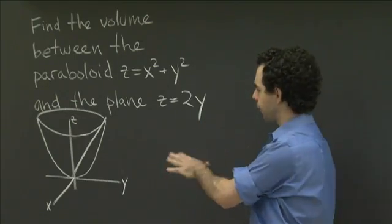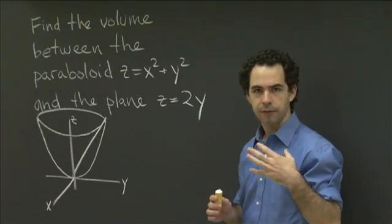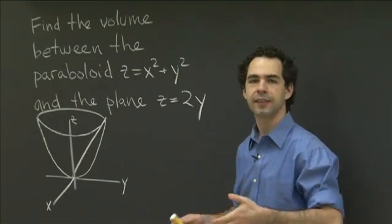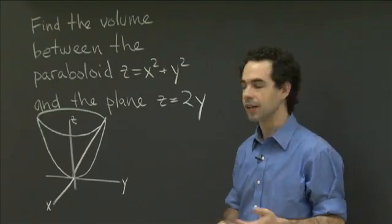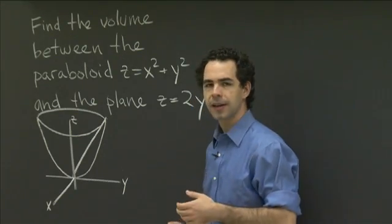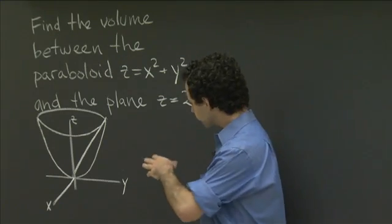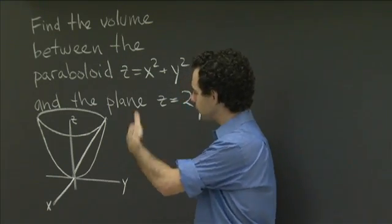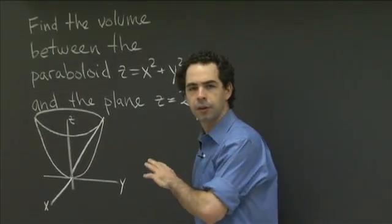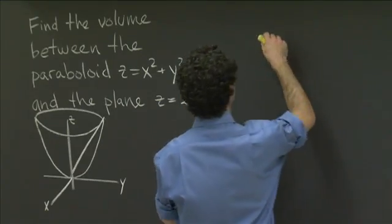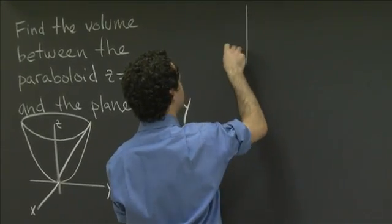Sometimes you have a problem with a triple integral and you need to set up your bounds of integration. Sometimes you can look at it and it's just clear what they are — if you're integrating over a cube, life is really easy. But in this case, this region that we want to integrate over is more complicated to understand. So it's relatively easy to see what the bounds on z are. So let me draw a two-dimensional picture — I'm going to draw the yz-plane cross-section here.